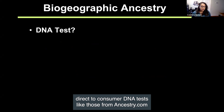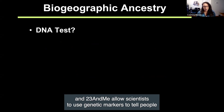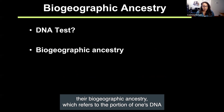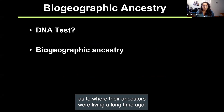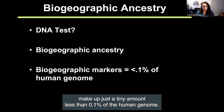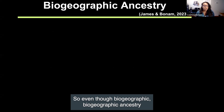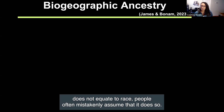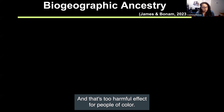Direct-to-consumer DNA tests like those from Ancestry.com and 23andMe allow scientists to use genetic markers to tell people their biogeographic ancestry, which refers to the portion of one's DNA that provides a guess as to where their ancestors were living a long time ago. These genetic markers of biogeographic ancestry make up less than 0.1% of the human genome. Even though biogeographic ancestry does not equate to race, people often mistakenly assume that it does, and that's to harmful effect for people of color.